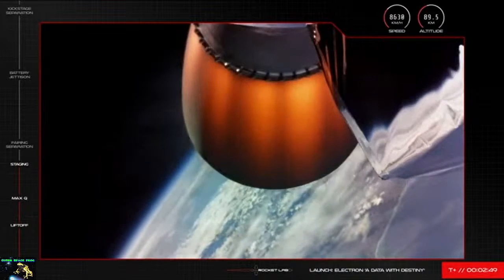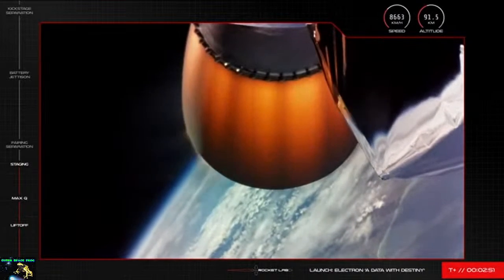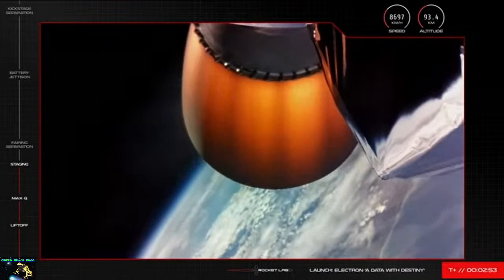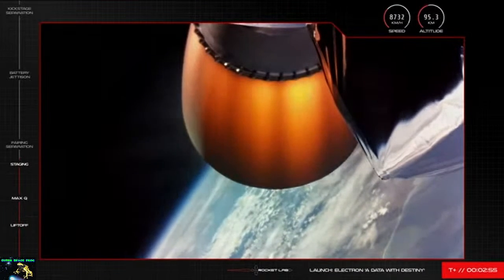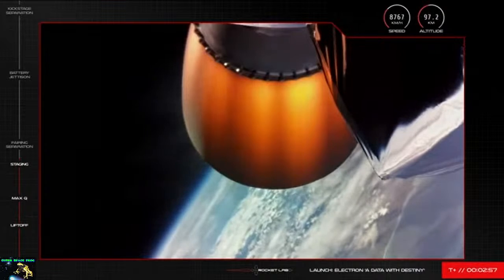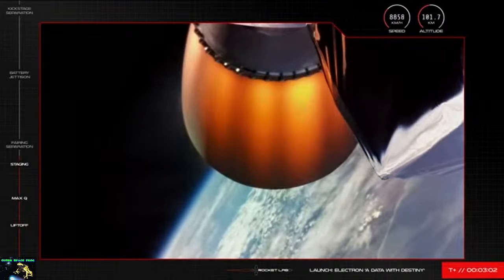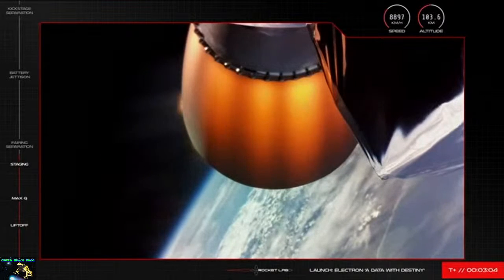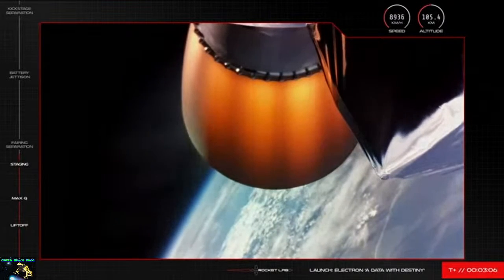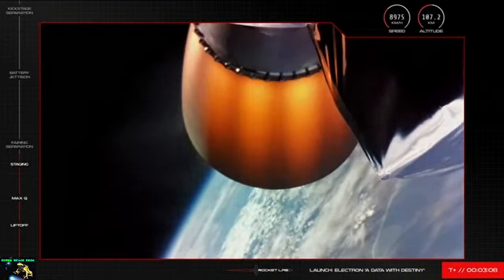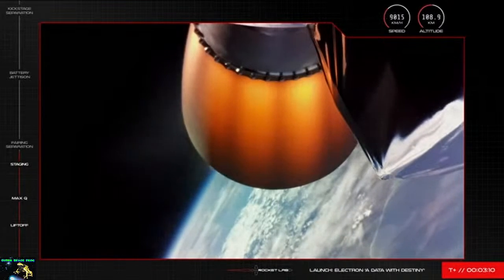And there we go, that's confirmation of successful MECO, stage separation, and second stage engine start. You can see the space optimized Rutherford engine glowing hot on your screen as it carries on in space. Now since we've cleared the lower atmosphere we no longer need the rocket's fairing to protect the satellites and we need the fairing out of the way to be able to safely deploy the satellites.